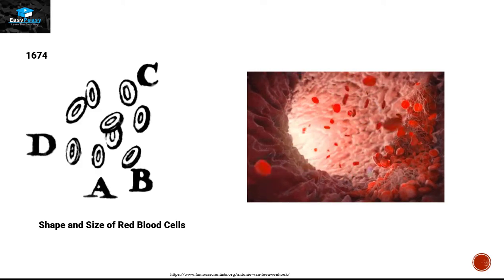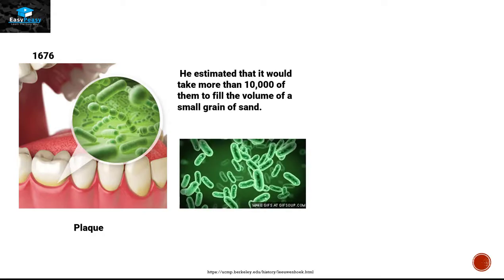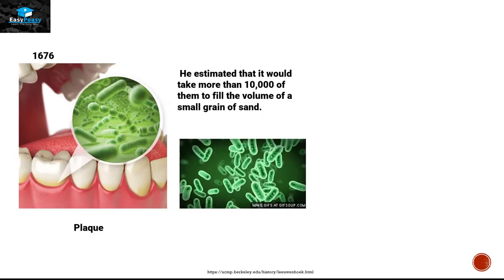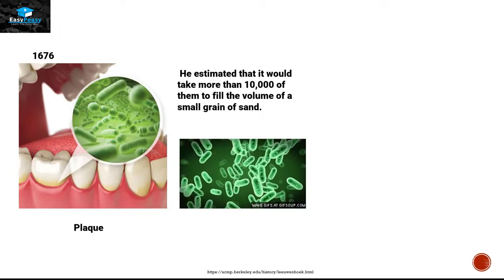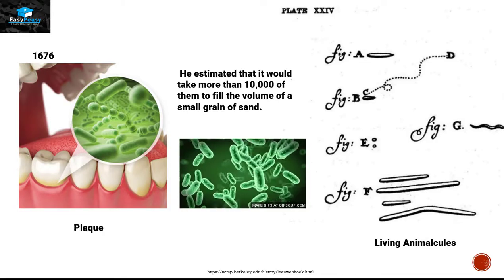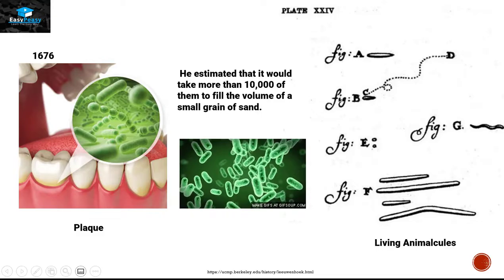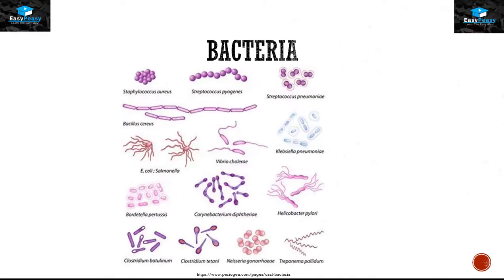In 1674, Leeuwenhoek also discovered the shape and size of red blood cells. Then in 1676, he took the plaque from his own teeth and tried to see what was inside it. He saw some minute creatures moving and estimated it would take more than 10,000 of them to fill the volume of a small grain of sand. He called them 'living animalcules' because they moved like animals — and that's how bacteria were discovered.